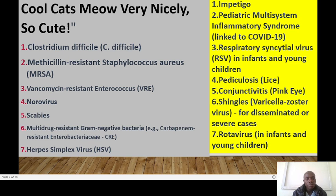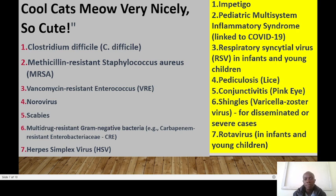To remember the diseases requiring contact precautions, use the mnemonic 'cool cut smile very nicely': C for Clostridium difficile, M for methicillin-resistant Staphylococcus aureus (MRSA), V for vancomycin-resistant Enterococcus (VRE), N for norovirus, and S for scabies. We also include multi-drug-resistant gram-negative bacteria, herpes simplex, impetigo, pediatric multisystem inflammatory syndrome, respiratory syncytial virus in infants and young children, pediculosis, conjunctivitis (pink eye), shingles in some cases, and rotavirus in infants and young children.